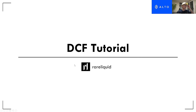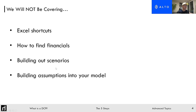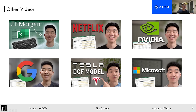The objective of today is to help you understand both the theory and the mechanics of the discounted cash flow. We're going to go through different concepts of what a DCF is, and I'm going to explain everything step by step, then jump into Excel for each step. Just to be clear, we will not be covering Excel shortcuts, how to find financials, or building out different scenarios — you can look into my other videos for that.